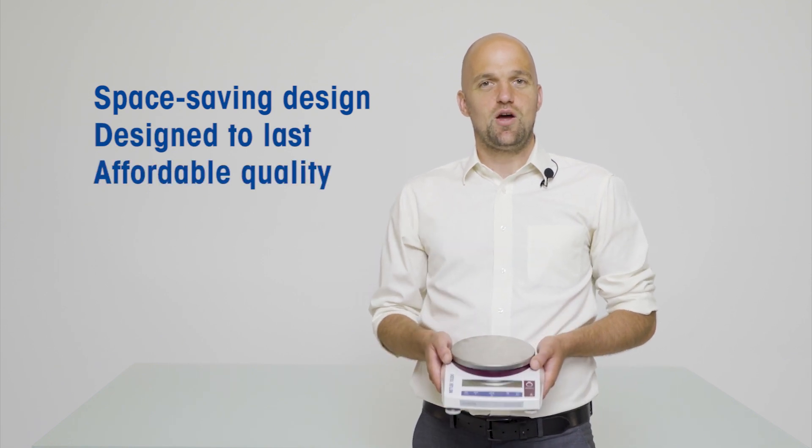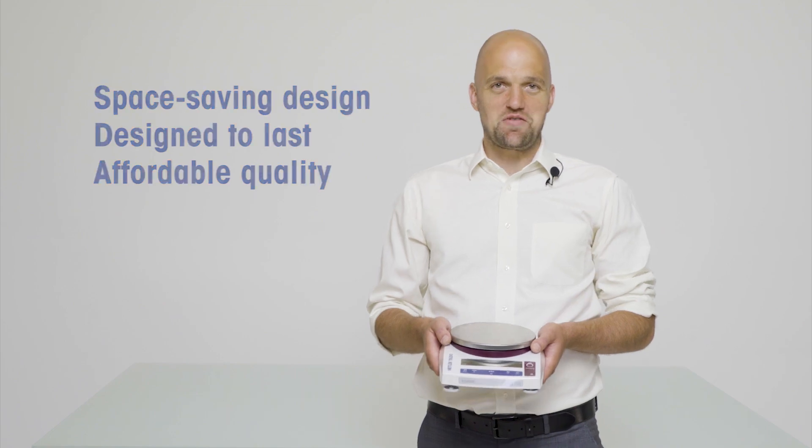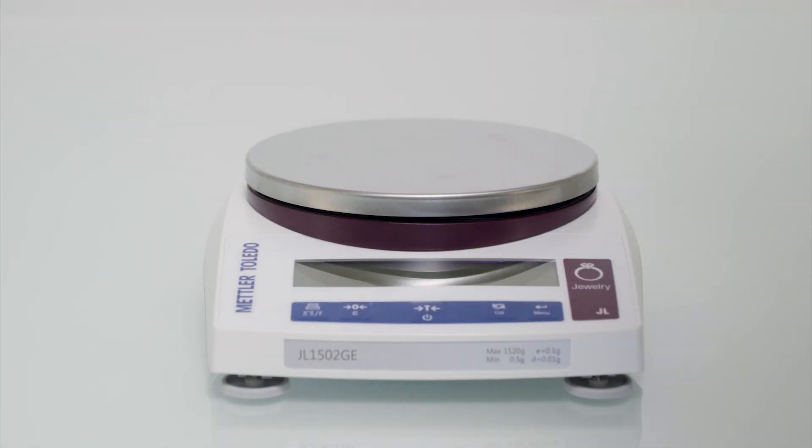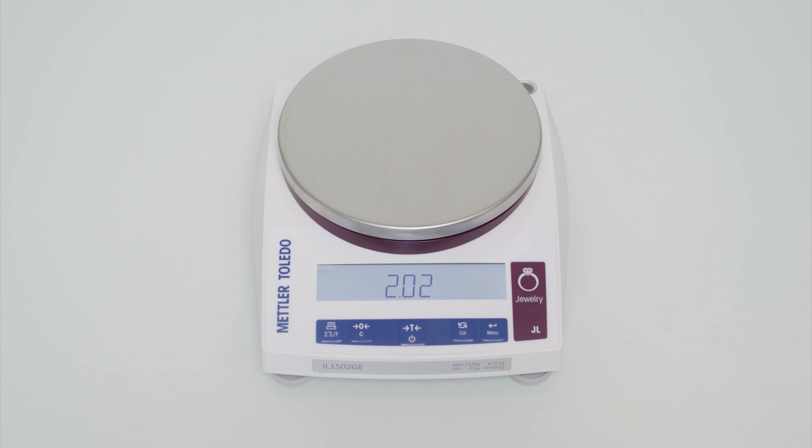Proudly introducing the JL, weighing when and wherever you want. Let's have a closer look. The JL is a portable jewelry balance available with capacities up to 6.2 kilograms and with readabilities down to 0.01 grams.